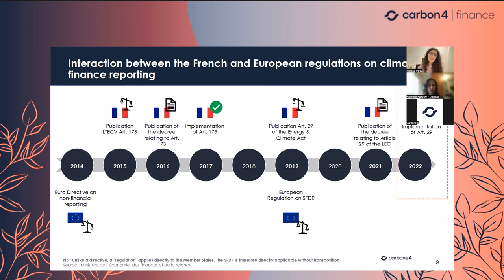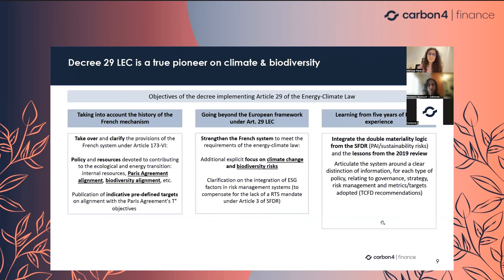Article 29 is the result of the history of the French mechanism — everything we learned from Article 173 — covering Paris Agreement alignment, biodiversity alignment. What is very important is that it asks you to publish predefined targets on alignment with the Paris Agreement in terms of temperature objectives. This matters for the government to see where the financial sector stands in terms of the Paris Agreement.